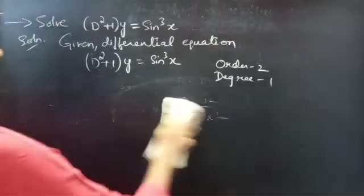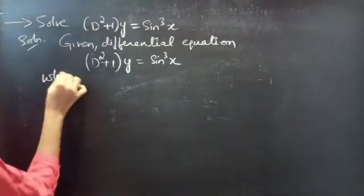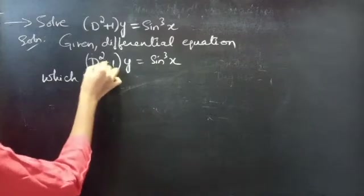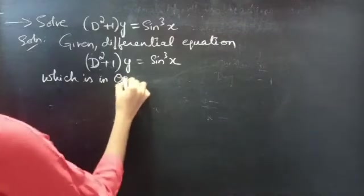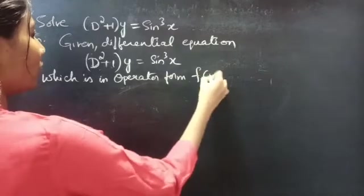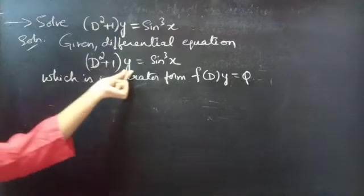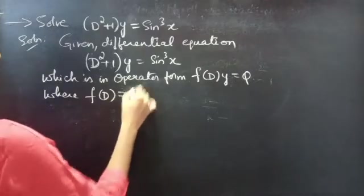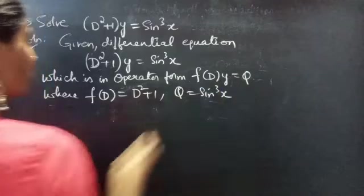So we are given an equation which is in operator form, in terms of D. Also it is in f(D)·y = Q form, where f(D) = D² + 1 and Q = sin³x.